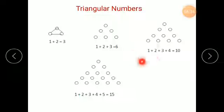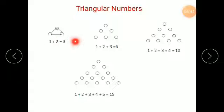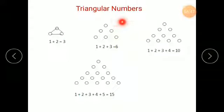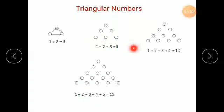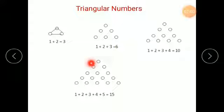So here 1 plus 2 gives us 3 total dots. In the next figure, first row has 1, second row has 2 — so 1 plus 2 equals 3. Next: first row 1, second row 2, third row 3 — so 1 plus 2 plus 3 equals 6. Then 1 plus 2 plus 3 plus 4 equals 10. And 1 plus 2 plus 3 plus 4 plus 5 equals 15.